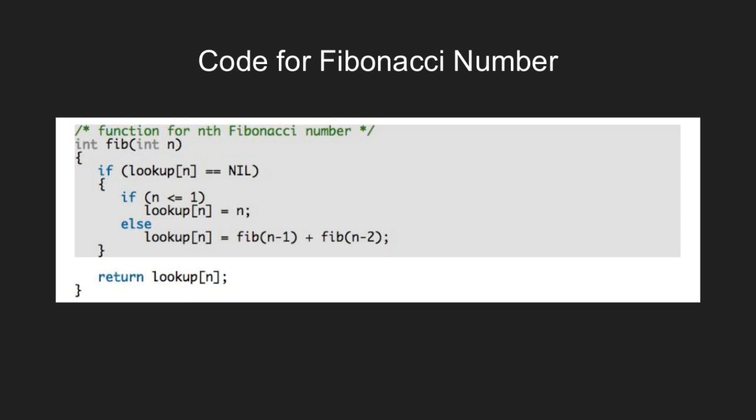And here we have the memoization based solution to the Fibonacci number problem. We begin with checking whether an entry in the lookup table exists. If it does not, we check whether n satisfies the base condition. If n does satisfy the base condition, we update the table. If n does not satisfy the base condition, we split the problem into subproblems and solve them recursively. And finally, we return lookup n, which is the required value.